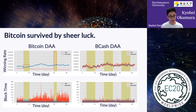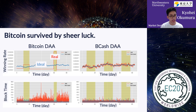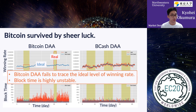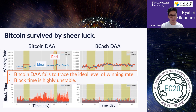These figures show a typical sample path in our simulation. The blue line corresponds to the ideal level of winning rate, and the red line corresponds to the realized winning rate under Bitcoin DAA. We can see that Bitcoin DAA fails to trace the ideal level of winning rate, and as a result, block time is highly unstable. On the other hand, Bitcoin Cash DAA behaves much better.